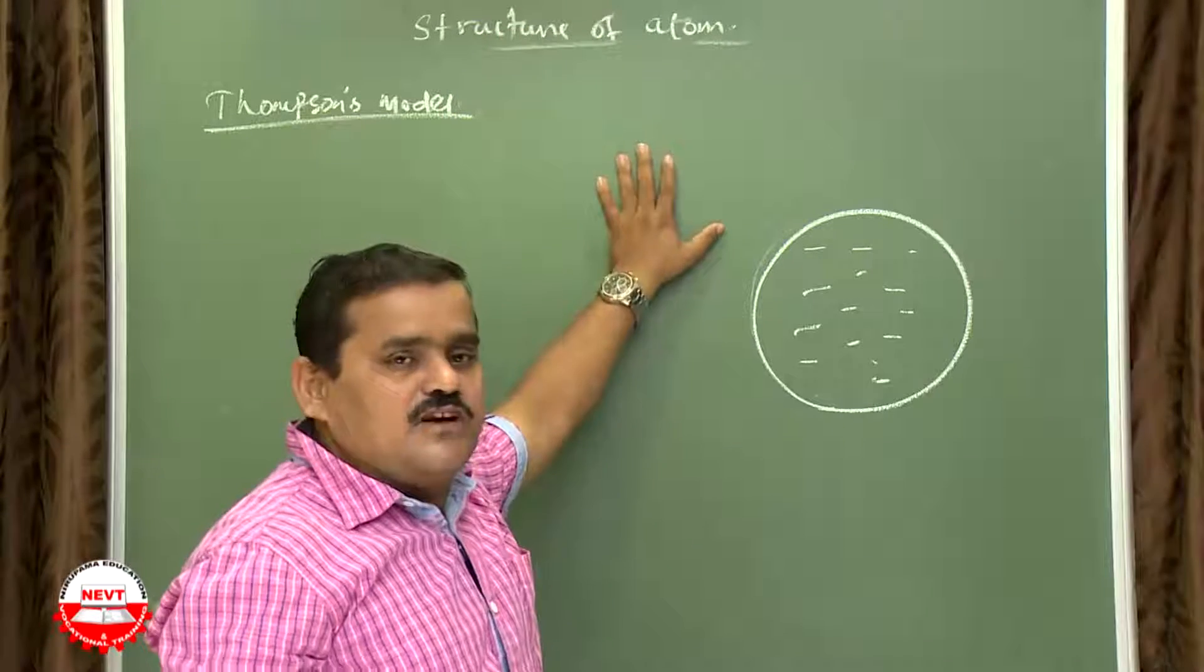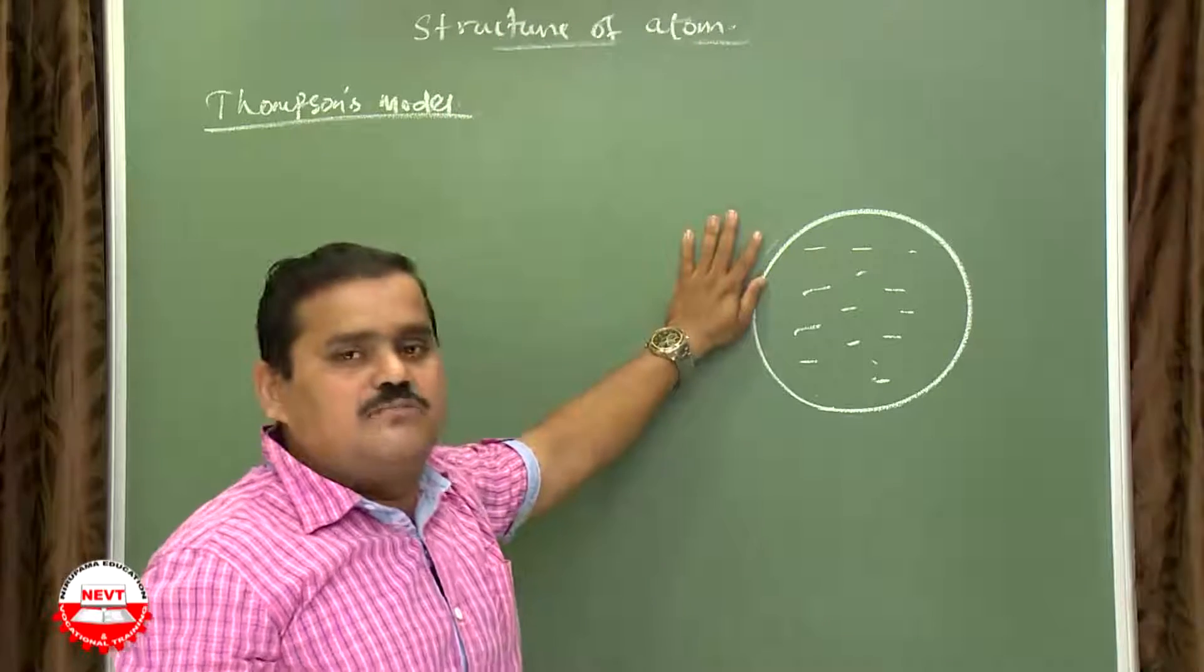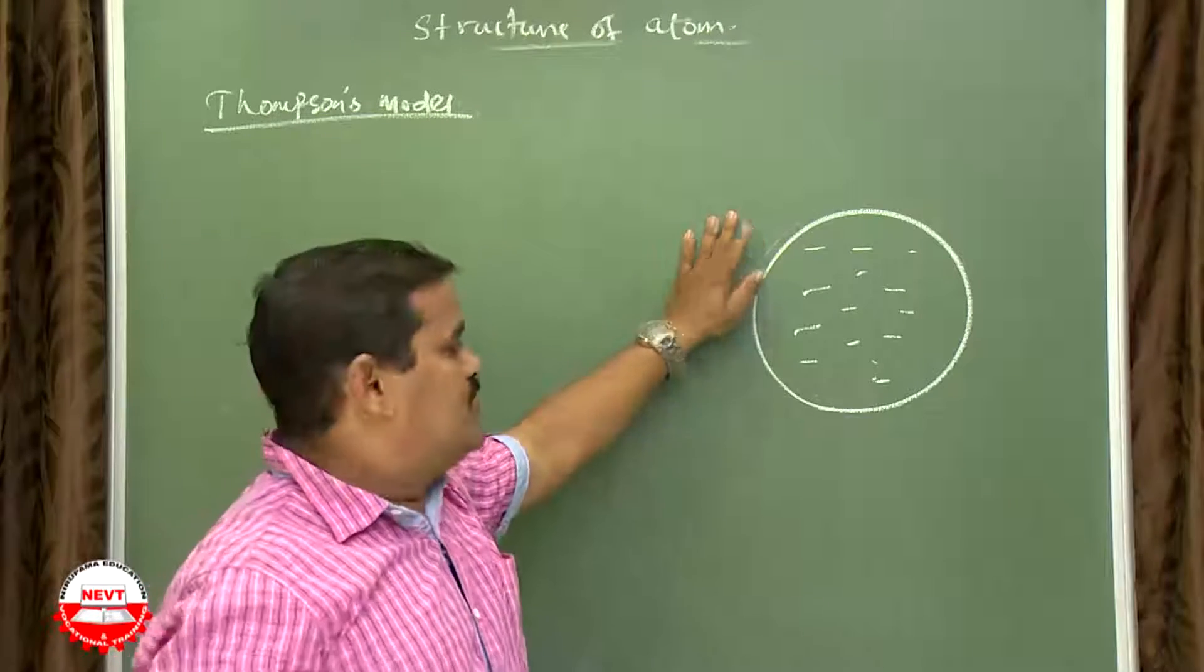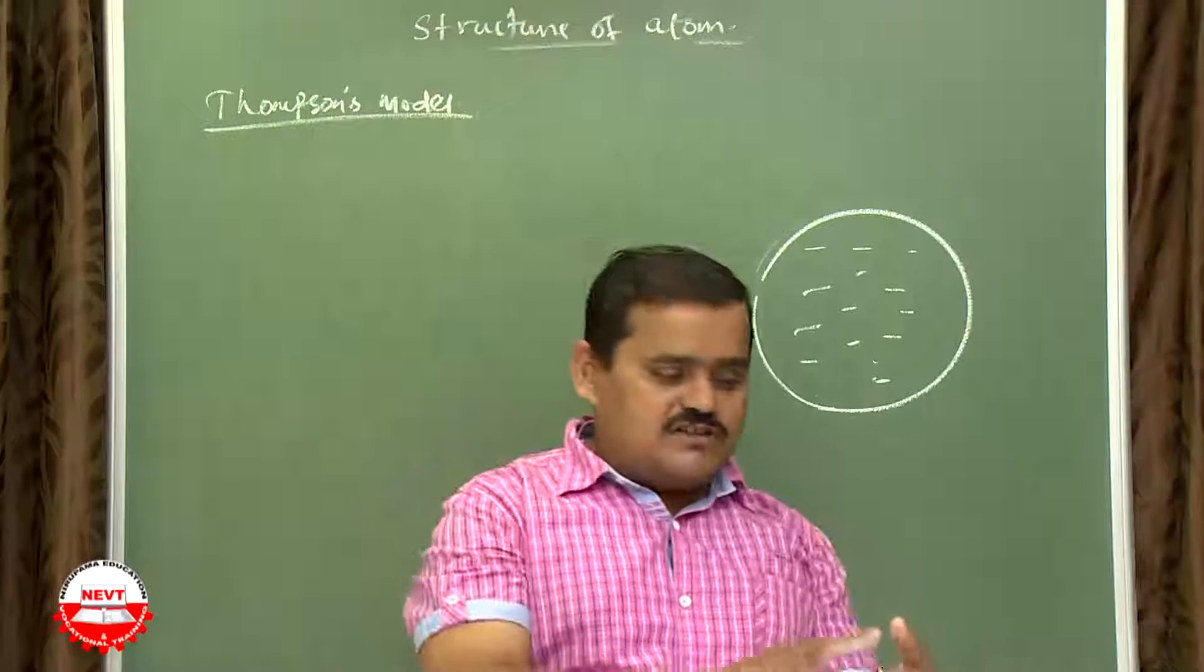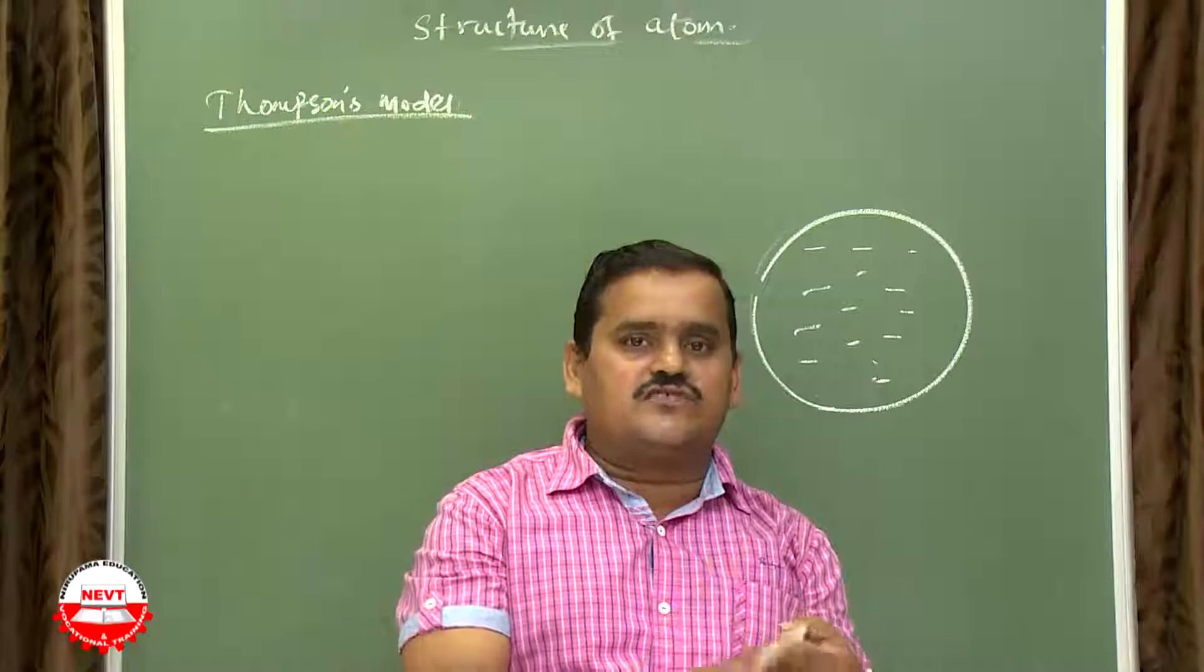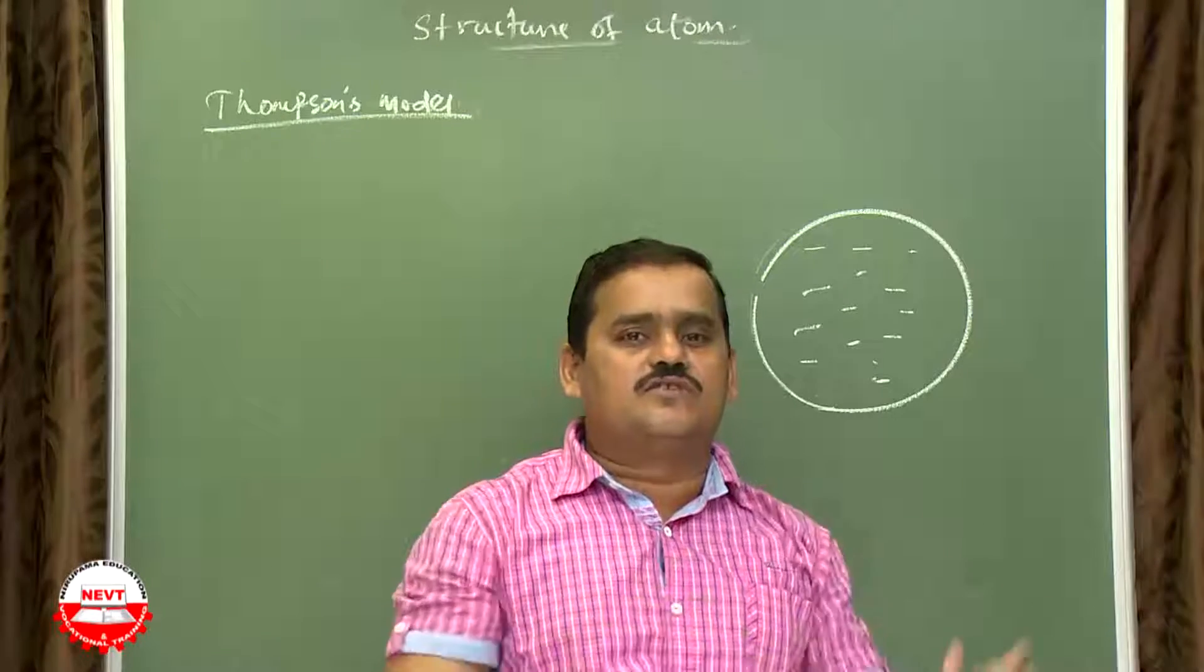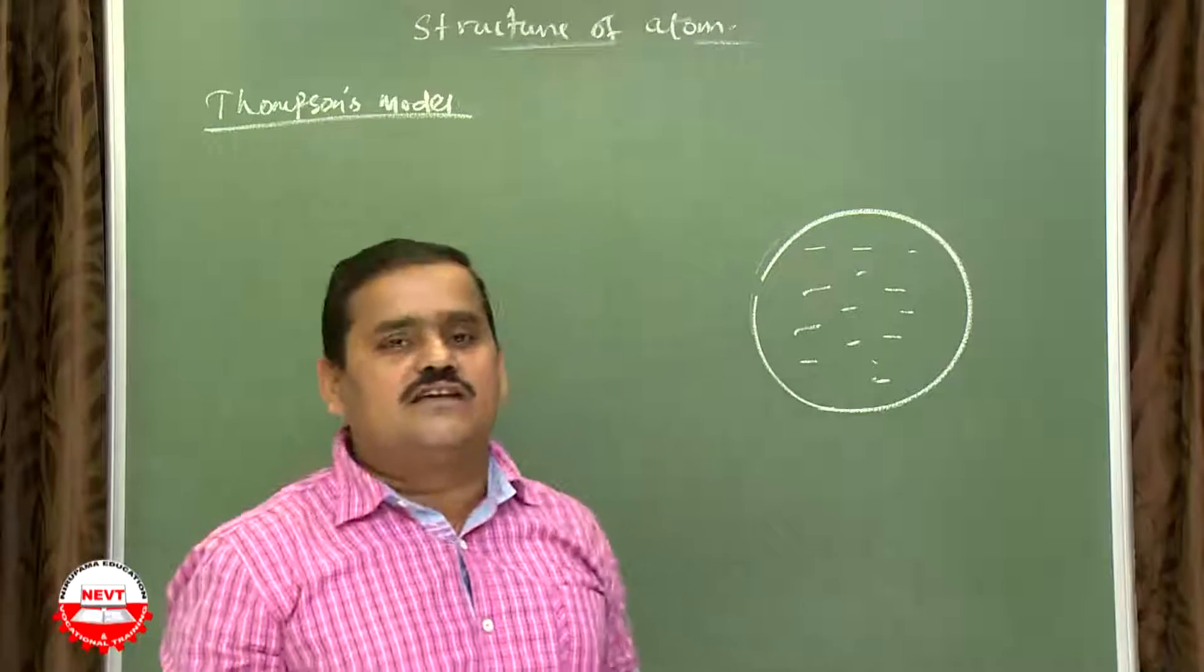Thomson's atomic model cannot explain the stability of atom. Why? For understanding point of view, let me explain this. When a positive charge and negative charge come close to each other, they will get neutralized, or a huge number of positive negative comes, means they will explode or they will get neutralized.